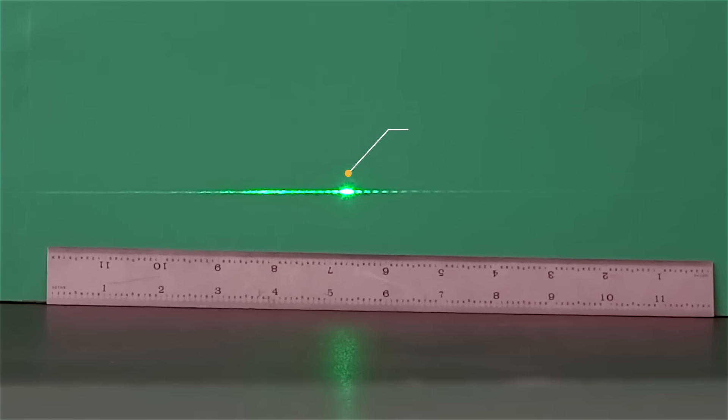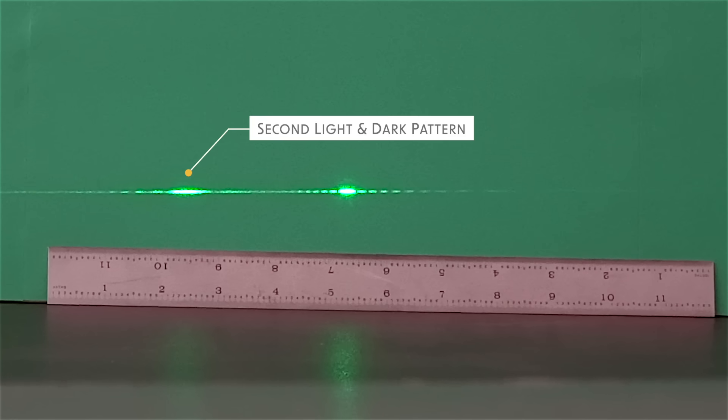Twist the caliper a few degrees to the right. If done carefully and slowly, you will see a second pattern emerge. Note how the spacing between the light and dark bands also change.